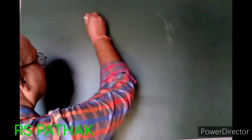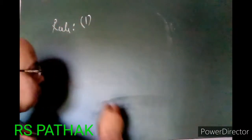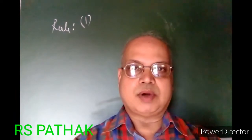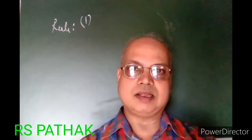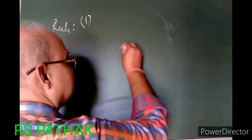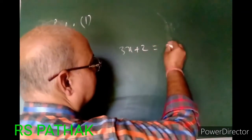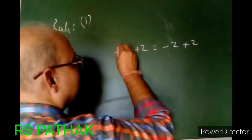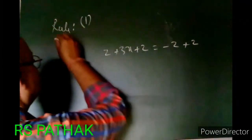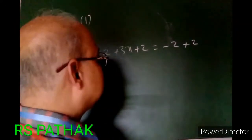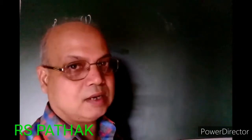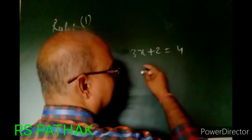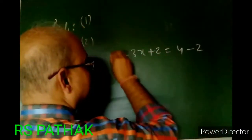Rule number 1: both sides will be added by the same number. For example, if we have 3x + 2, we can add plus 2 to both sides. Rule number 2: both sides will be subtracted by the same number. For example, 3x + 2 > 4 — we subtract 2 from both sides.